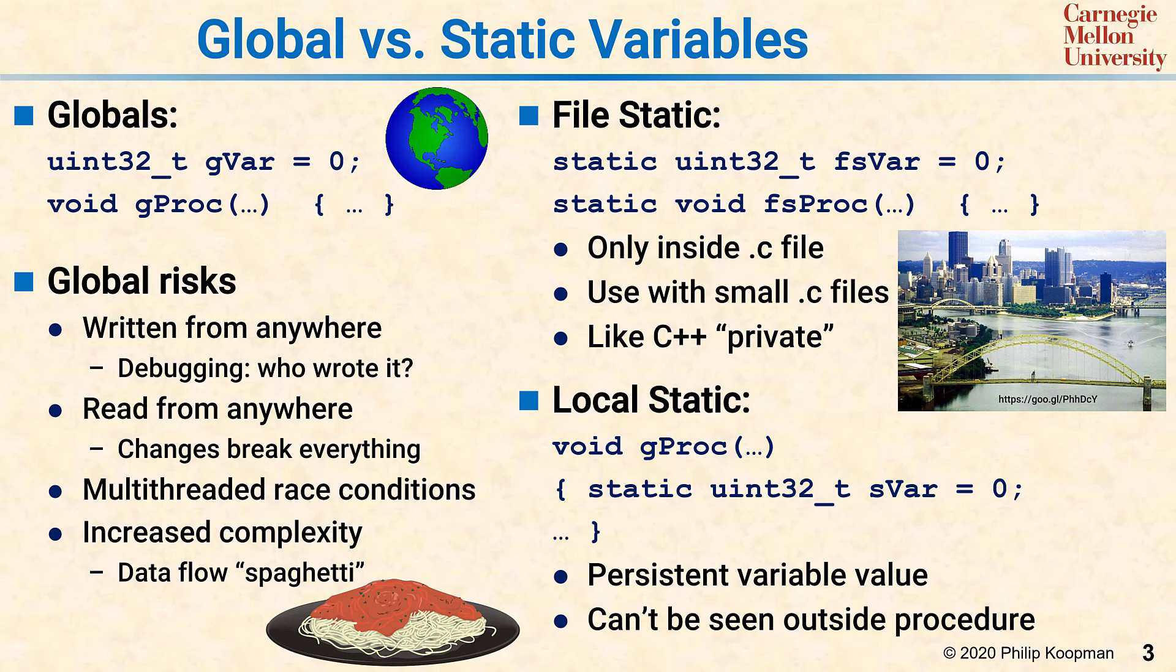Again, svar is only visible inside GPROC and other procedures will not be able to see it. Local static variables have the advantage of providing persistent values and also minimize scope so that only code in that procedure can see it. A local static variable is like having a single house in a city and you have to enter the house before you can even see the variable.